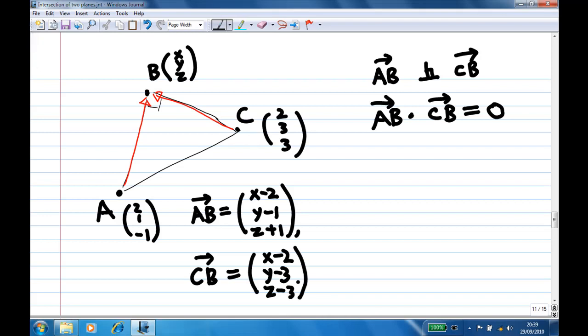Using the algebraic approach now, to find the dot product I should get x minus 2 multiplied by x minus 2. This will give me x minus 2 times x minus 2 plus another one, y minus 1 multiplied by y minus 3. This will give me y minus 1 multiplied by y minus 3 plus z plus 1 times z minus 3.